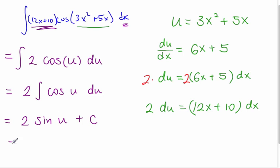And the very last step with all u substitution techniques is you plug the x's back. So you get 3x squared plus 5x plus c. And that is our u substitution.